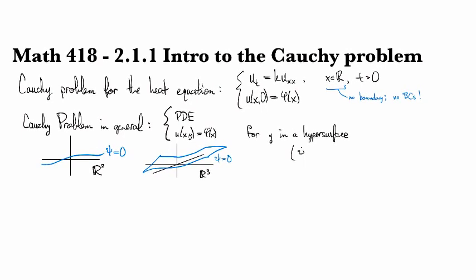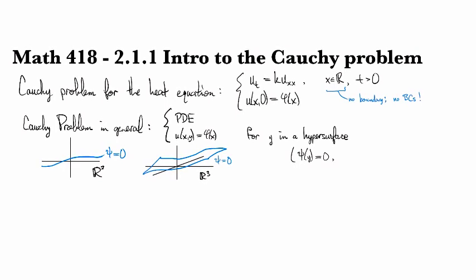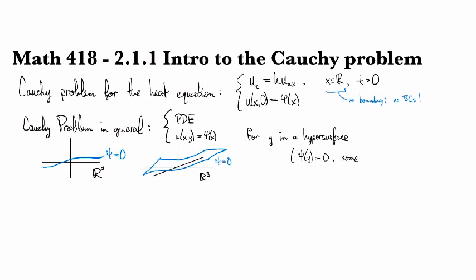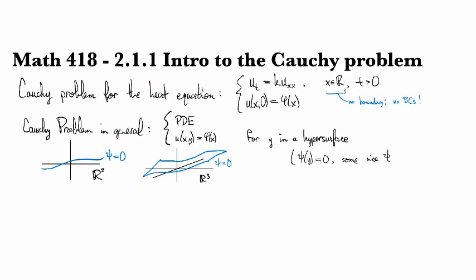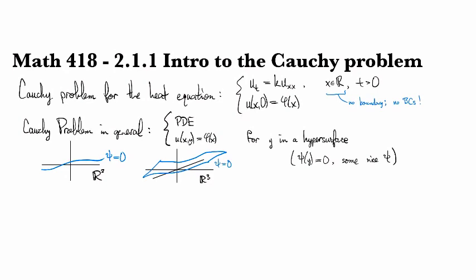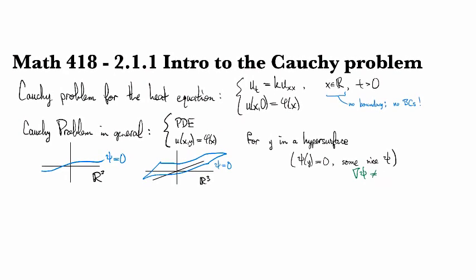So the idea is hypersurface is defined by where this is equal to zero for some nice function psi. Maybe nice means that the gradient of psi is never zero.